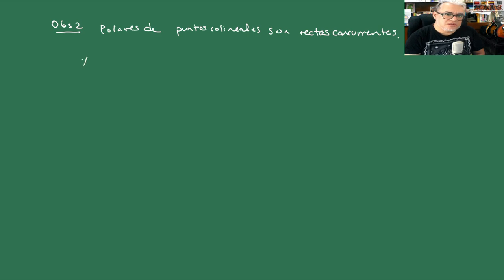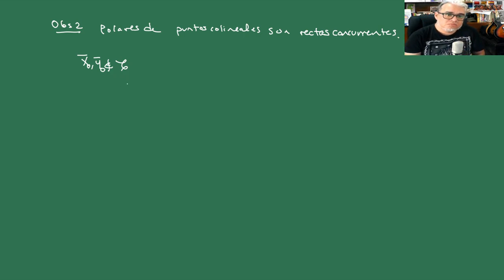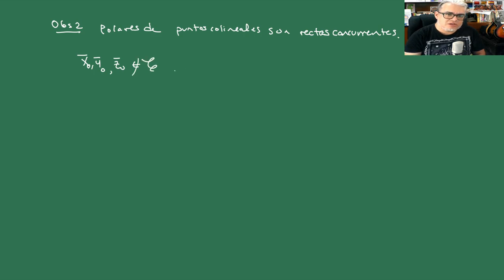La observación 2 es que las polares de puntos colineales son rectas concurrentes. Digamos que X₀, Y₀, Z₀ no están en la cónica, y el determinante de la matriz compuesta por esas columnas se anula.